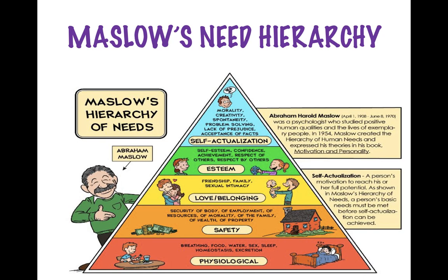Once physiological needs are satisfied, an individual moves towards the higher level need known as safety needs. Safety needs include employment, money, making a house, safety of family, health, and property. Once these are achieved, a person moves to the next level — love and belongingness — where he tries to discover friendship, family, and intimacy with individuals.